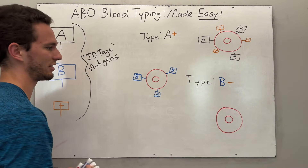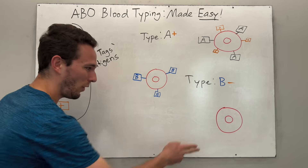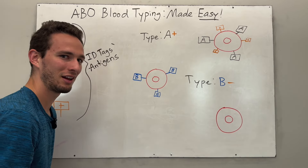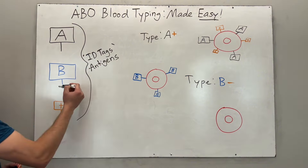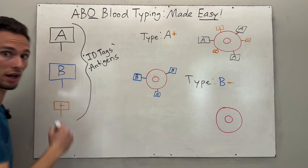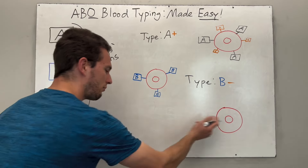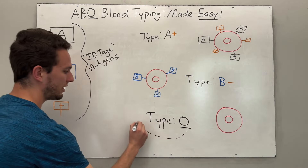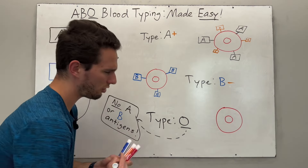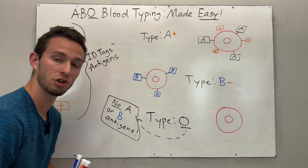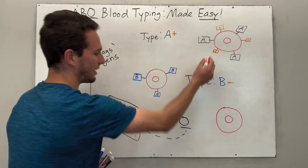Let's try one more example. This cell has no antigens drawn on it, so we need a new letter. O blood basically means the absence of A and B antigens, so this person would be type O — no A or B antigens. And since this cell also doesn't have the positive antigen, it would be O negative because we lack that positive antigen.